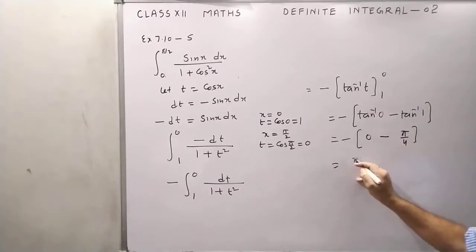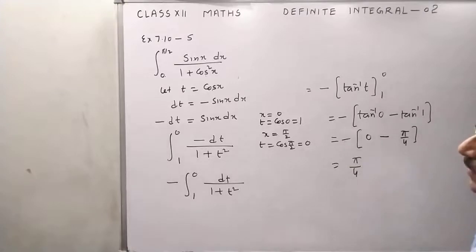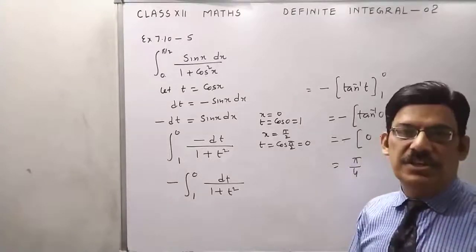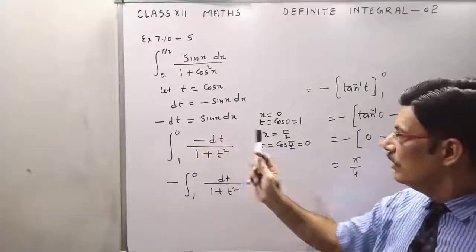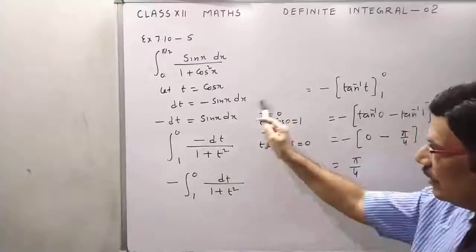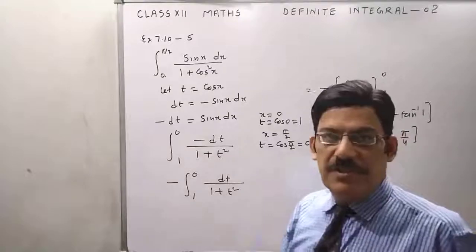Now minus minus gives plus, we have pi by 4. So this was the question of substitution. Every time whenever you suppose a variable t or u, you have to change the limit also at each step. Okay, thank you.